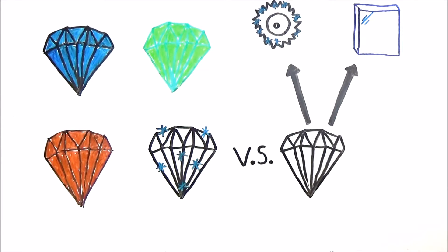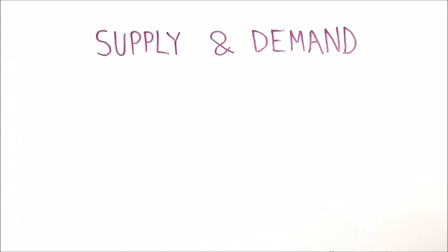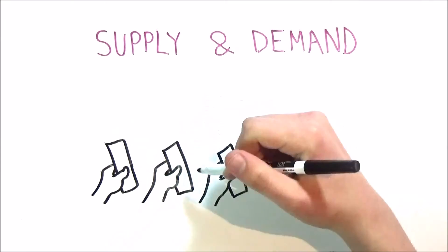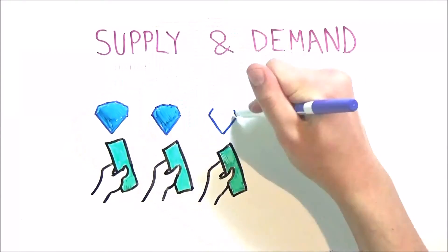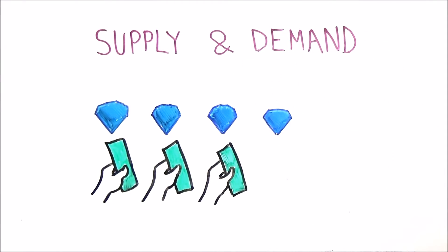Diamonds are expensive due to a phenomenon known as supply and demand. Put simply, if supply is greater than demand, the price will fall, and if the supply is lower than the demand, the supply will be desirable and there will be less of it so it will rise in price.